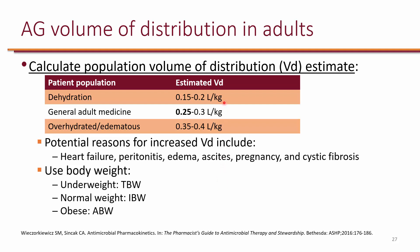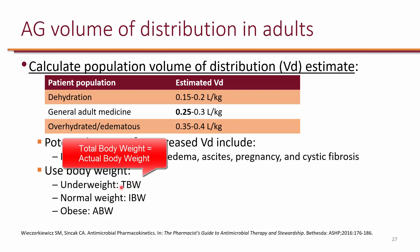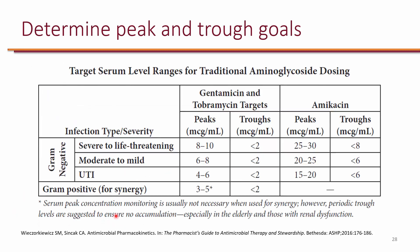Because these numbers are in liters per kilogram, you have to make sure you use the right weight. Generally speaking, for a normal person we use ideal body weight. If someone weighs less than their ideal body weight, you should use their actual body weight, which will be the smaller number. And in obese patients, we use adjusted body weight.